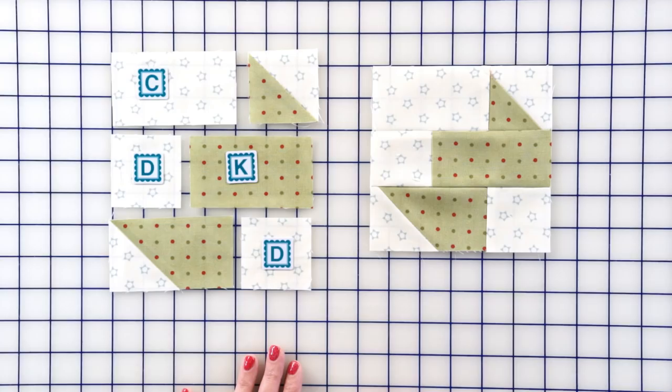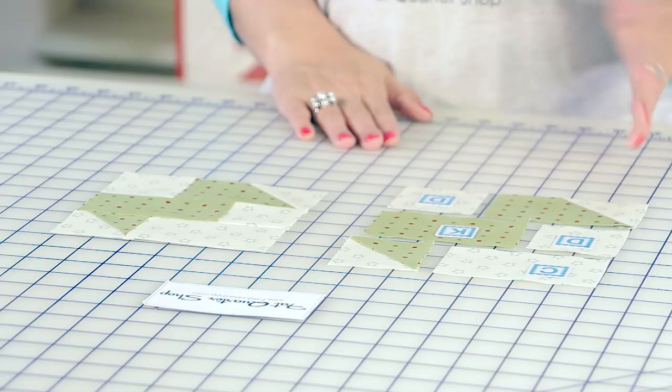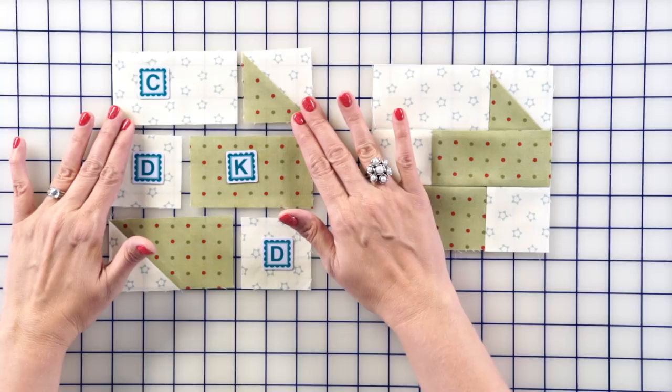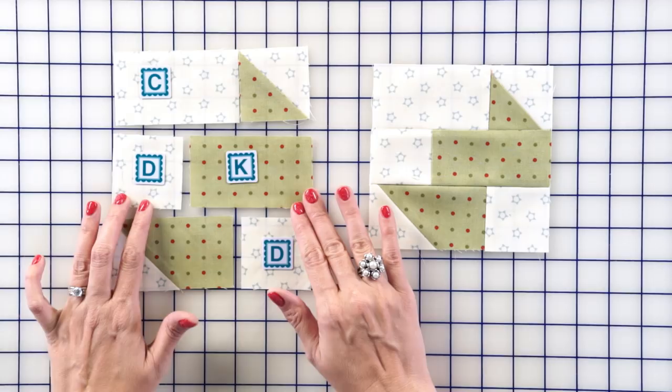Now we're going to take all the units we made and some squares and rectangles to make our corner unit. You're going to be sewing the G and the half square triangle unit together, press toward the white. Your fabric D and K press toward the green.